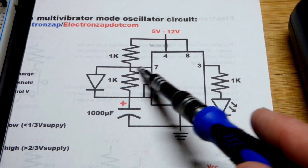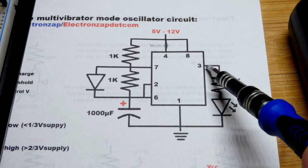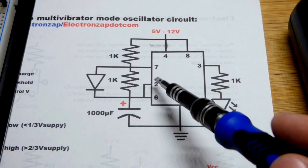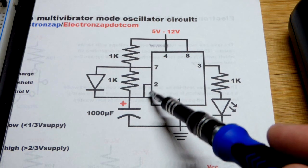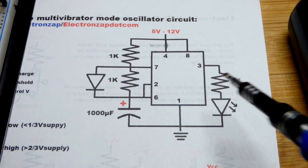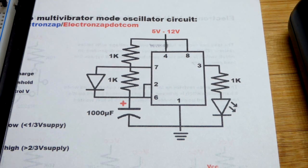Pin seven stops discharging, it becomes like an open switch. It's as if it doesn't exist. The output goes high, and the capacitor goes back to charging. So it keeps bouncing back and forth between two-thirds and one-third supply voltage, and the output keeps bouncing high or low.